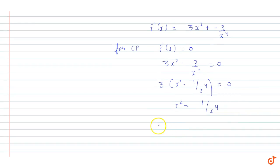So, indirectly, here we have 2 values. So, x is equal to minus 1 and x is equal to 1. So, there are 2 critical points here.